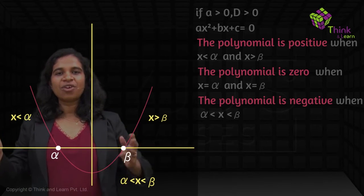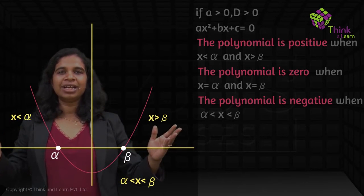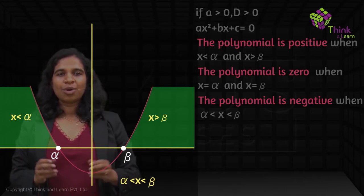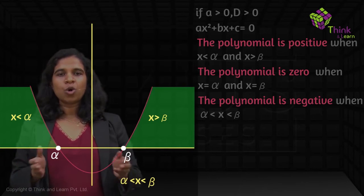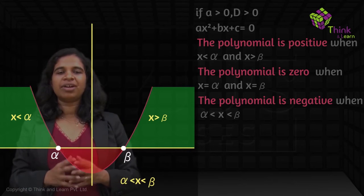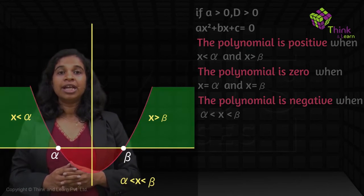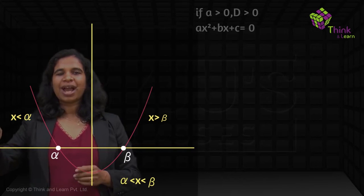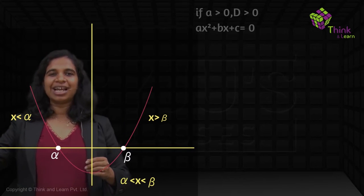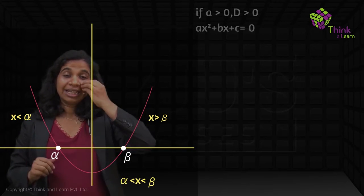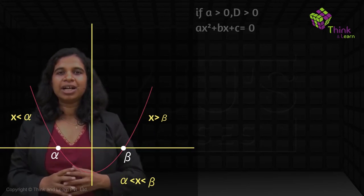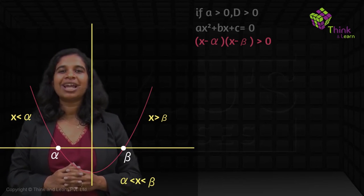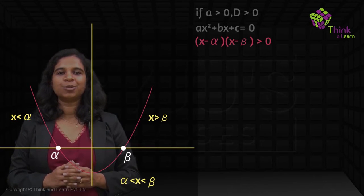So x less than alpha or x greater than beta is the case where the polynomial is positive. When x equals alpha and beta, it's 0. Between alpha and beta, it is negative. Now one cool way of writing x is either less than alpha or greater than beta is: (x − alpha)(x − beta) > 0.